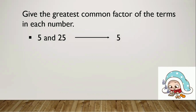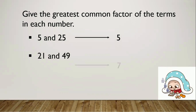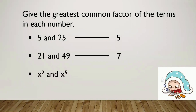So the greatest common factor of 5 and 25 is 5. The next one is 21 and 49, and the greatest common factor is 7. The last example is x squared and x to the fifth power. Can you think of the greatest common factor of those terms? Yes, it is x squared.